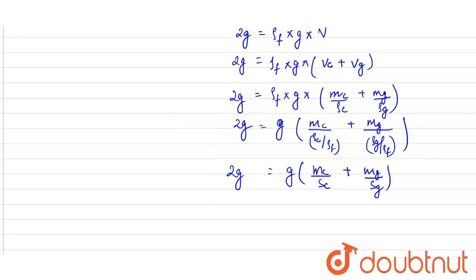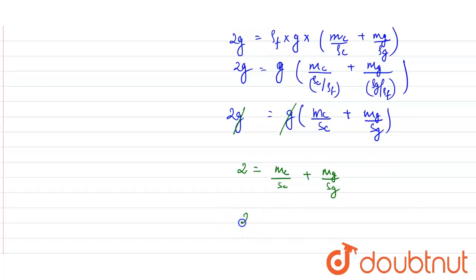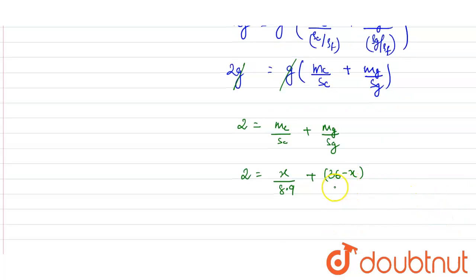Acceleration due to gravity cancels out, giving: 2 = mass of copper / specific gravity of copper + mass of gold / specific gravity of gold. The mass of copper is x grams with specific gravity 8.9, and the mass of gold is (36 − x) grams with specific gravity 19.3, since the total weight in air is 36g.